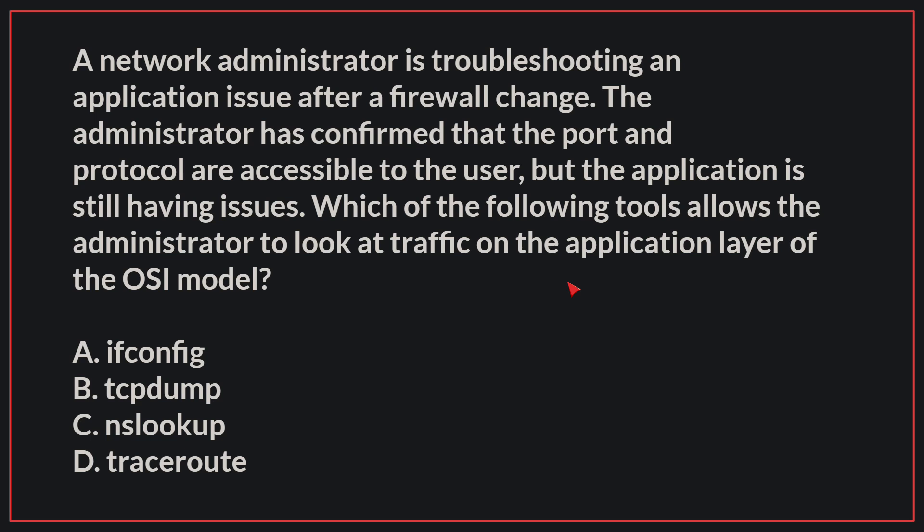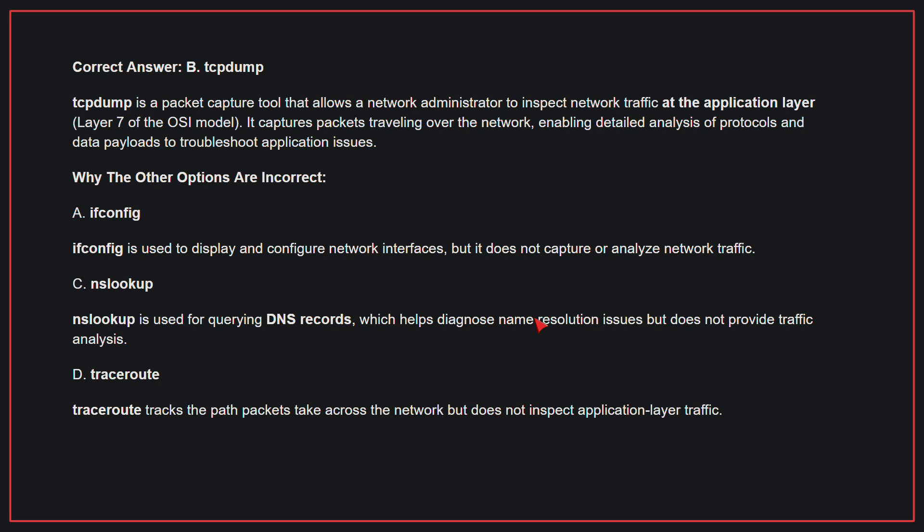A network administrator is troubleshooting an application issue after a firewall change. The administrator has confirmed that the port and protocol are accessible to the user, but the application is still having issues. Which of the following tools allows the administrator to look at traffic on the application layer of the OSI model? The correct answer is B, TCP dump. TCP dump is a packet capture tool that allows a network administrator to inspect network traffic at the application layer. It captures packets traveling over the network, enabling detailed analysis of protocols and data payloads to troubleshoot application issues.